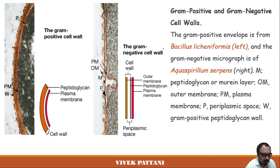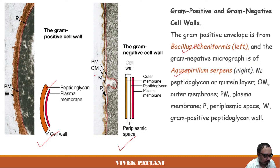The diagram shown here is a gram positive envelope from Bacillus licheniformis, and the gram negative one is from Aquaspirillum. The peptidoglycan or murein layer is shown here, along with the outer membrane and plasma membrane. In the gram negative cell wall you can clearly see that the amount of peptidoglycan is very low compared to gram positive bacteria.